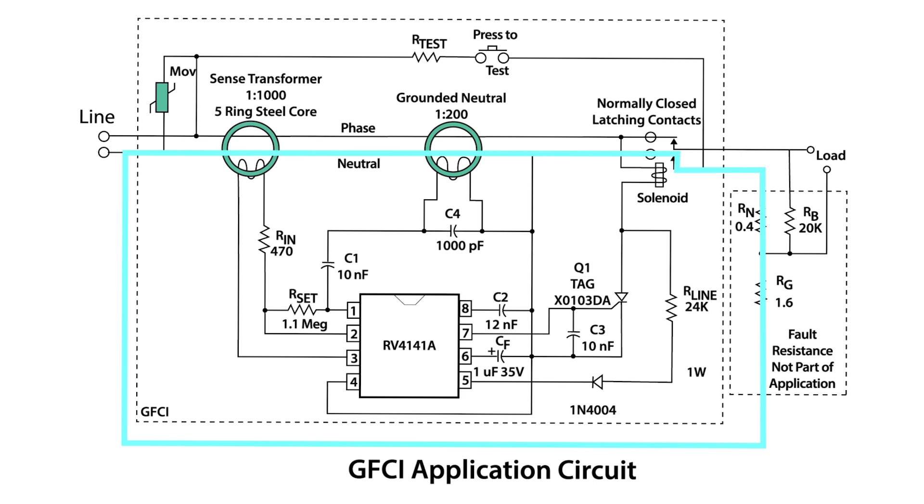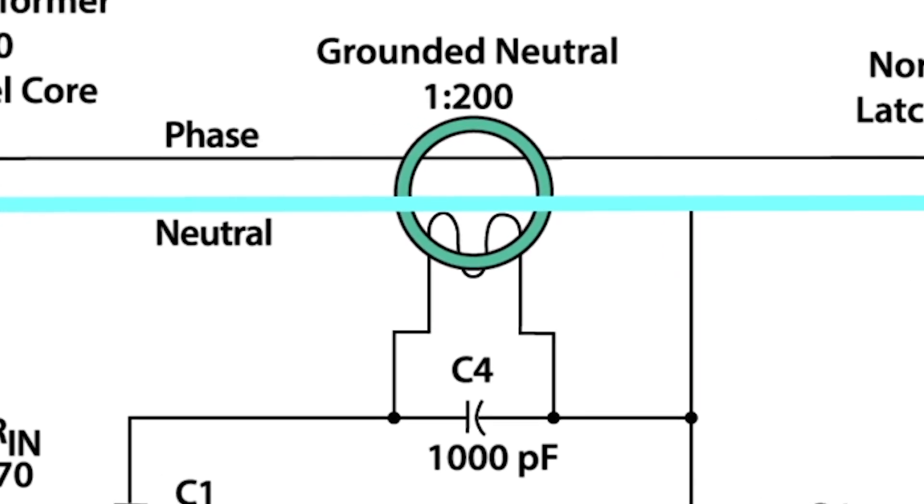The oscillations result from a tank circuit formed by the toroid secondary inductance and an external capacitor. In the Fairchild reference design, the oscillation frequency is 8 kilohertz.